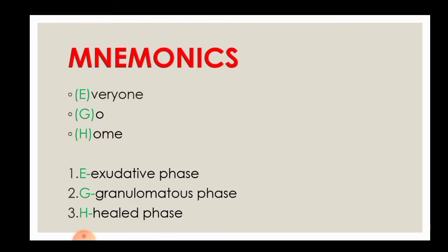To memorize this, the mnemonic is EGH - Everyone Go Home. E stands for the exudative phase, G for the granulomatous phase, and H for the healed phase. Thanks for watching - if you like this video, hit the like button and subscribe to my channel for future videos. Thank you.